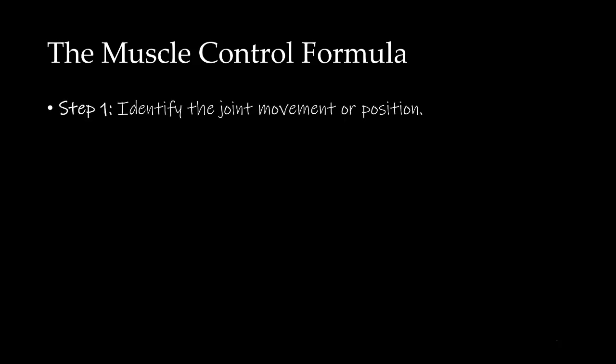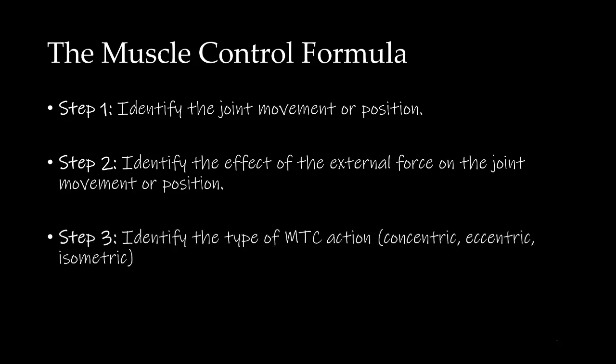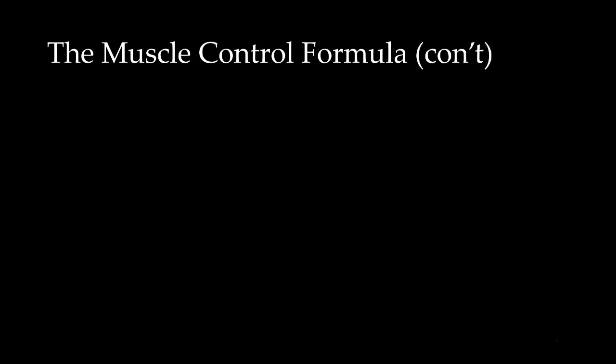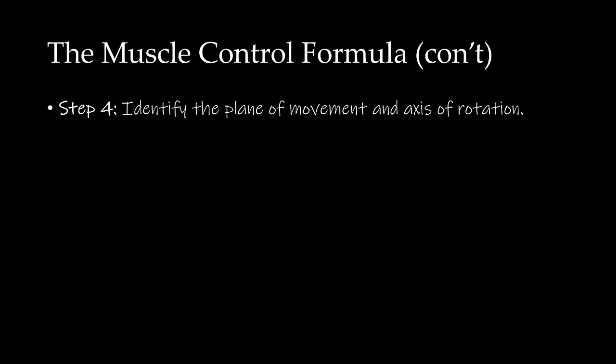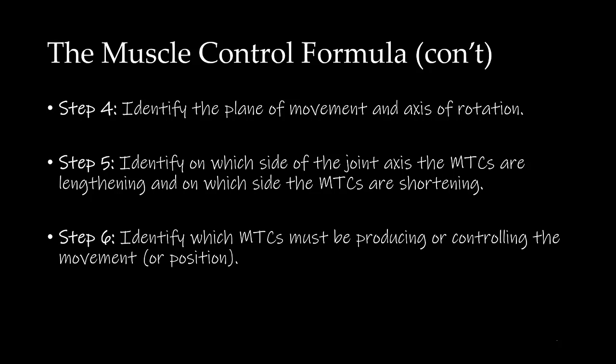Step 1 is to identify the joint movement or position. Step 2 is to identify the effect of the external force on the joint movement or position. Step 3 is to identify the type of MTC action, be it concentric, eccentric, or isometric. Step 4 is to identify the plane of movement and the axis of rotation. Step 5 is to identify on which side of the joint axis the MTCs are lengthening and on which side the MTCs are shortening. And finally, we put it all together in Step 6 to identify which MTCs must be producing or controlling the movement or position.